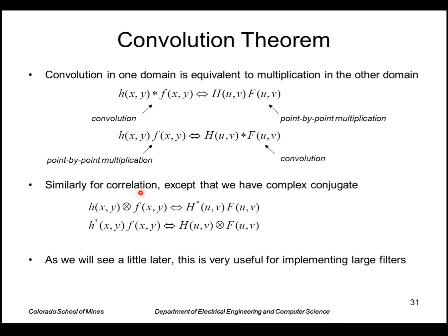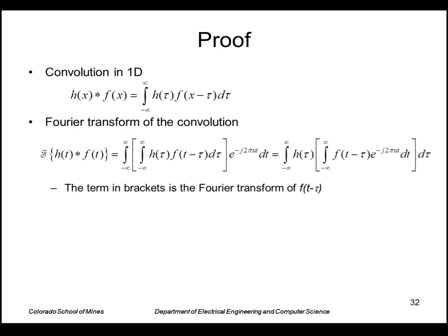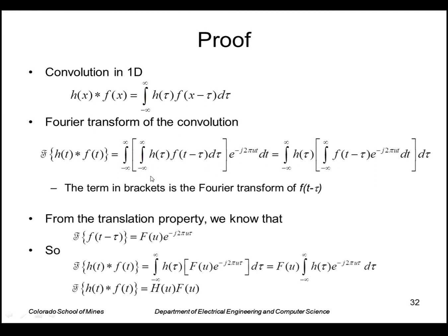Correlation turns out to be the same theorem except we put a complex conjugate on one of them. And this shows the proof of that in one dimension, just plugging the definition of a convolution into the definition of a Fourier transform. And we get that the result is just the product of H(u) times F(u).